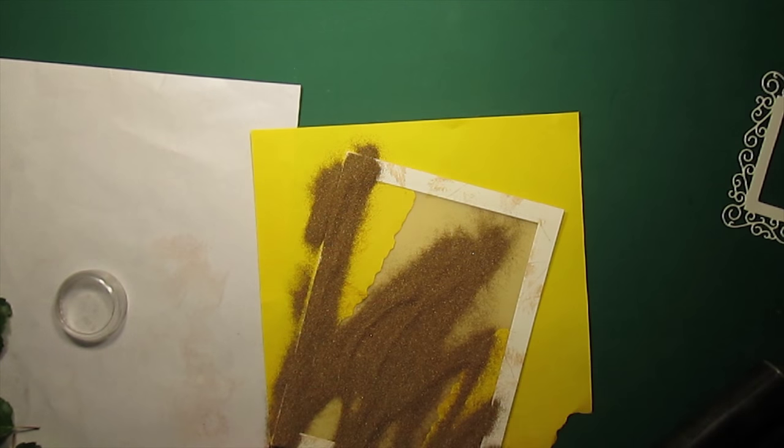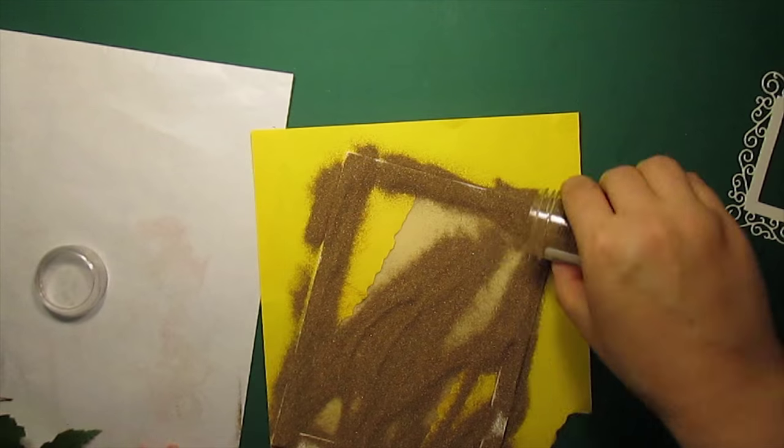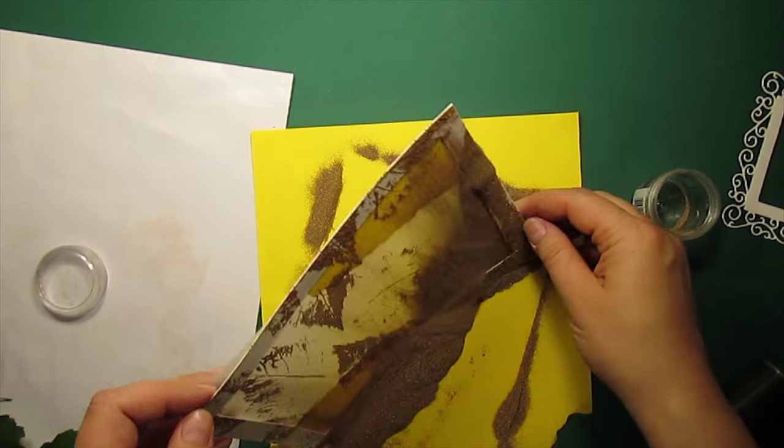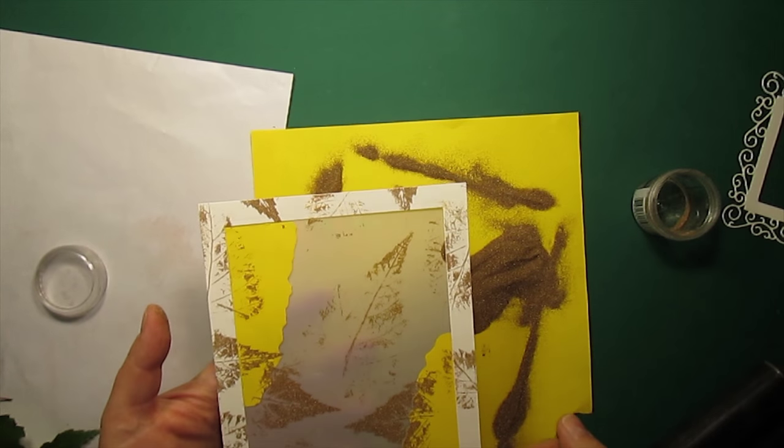I'm sprinkling the surface with the gold embossing powder by Ranger. And then I'm going to peel off the leaves, peel off the frame and masks, and then heat set the powder.